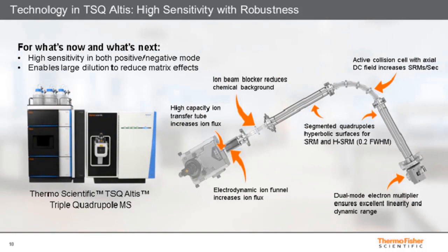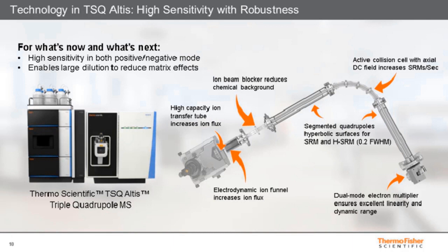The triple quadrupole used in these experiments was the TSQ Altis. There is a lot of new technology in this instrument — innovations in the ion source, mass analyzer, and RF electronics offer high sensitivity, reduced noise, and more data points with high SRM rates, allowing confident quantification of compounds at extremely low concentrations in the most challenging matrices such as food. The system offers very high sensitivity in negative mode, which is crucial for reaching low concentration levels for anionic pesticides. Novel ion optics reduce chemical background via ion beam blocking and source design, increasing robustness, reducing maintenance, and improving reproducibility.